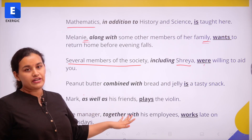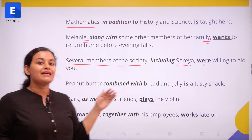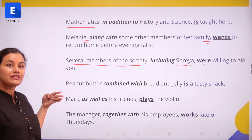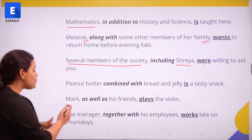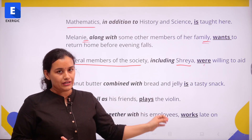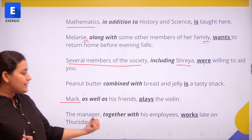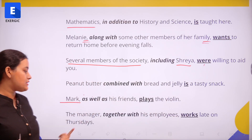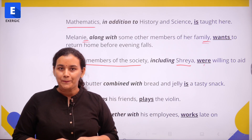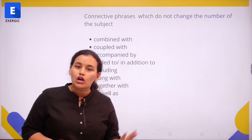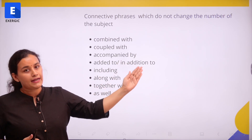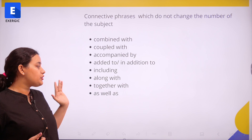Mark as well as his friends plays the violin. This again seems wrong when you say it out loud because you are referring to a number of people, but we always focus on the main subject which is singular. The manager together with his employees works late on Thursdays — the manager is singular so the verb is also singular. The connective phrases that do not change the number of the subject include: combined with, coupled with, accompanied by, added to, in addition to, including, along with, together with, and as well as.